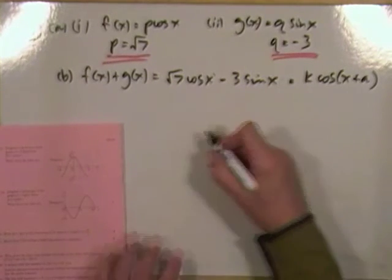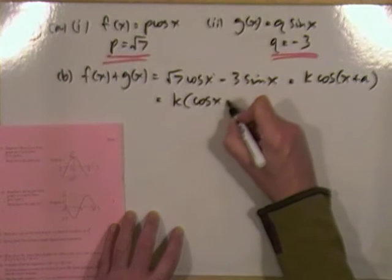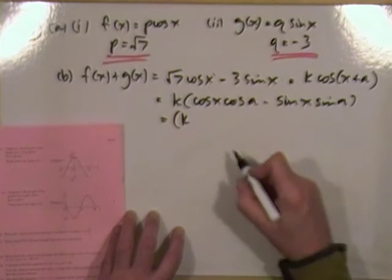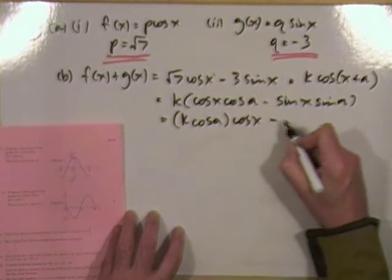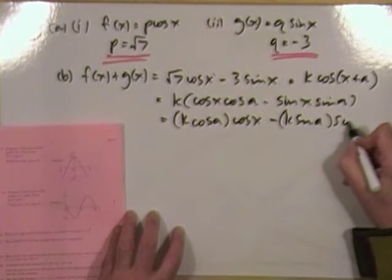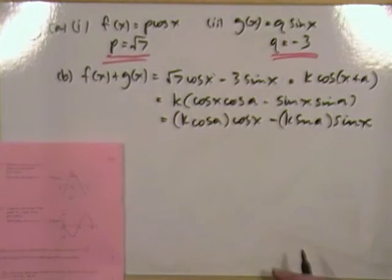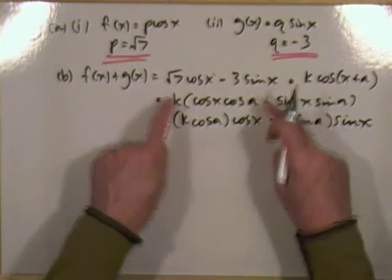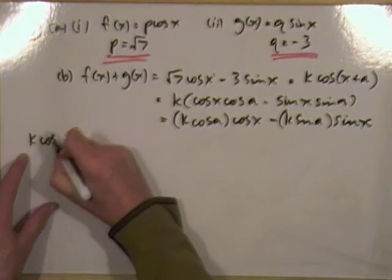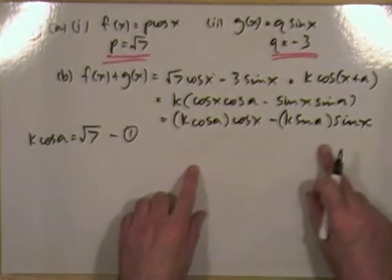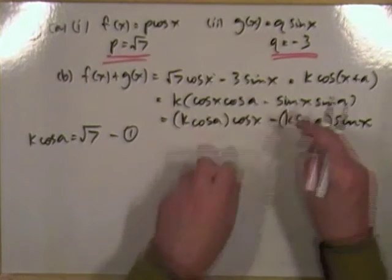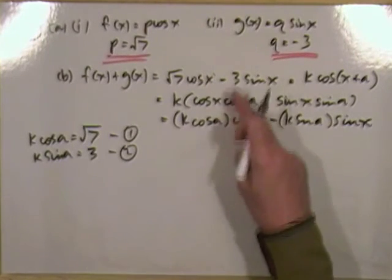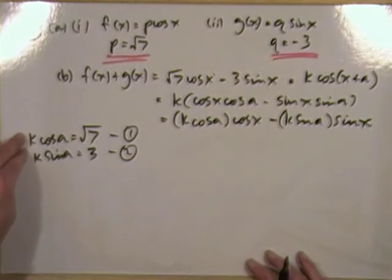Expand k cos(x + a): that's k times cos x cos a minus sine x sine a. Equating coefficients: k cos a must equal root 7 — call that equation 1. The coefficient of sine x: k sine a must equal 3 — call that equation 2. A pair of simultaneous equations.